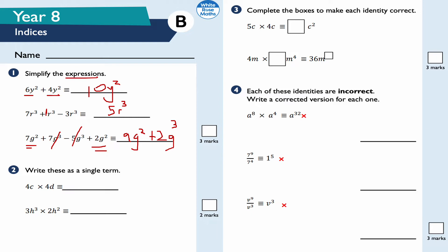Question number two: write these as a single term. 4c times 4d — 4 times 4 is 16, c times d is written as cd, so the answer is 16cd. Next: 3h cubed times 2h squared — 3 times 2 is 6. The laws of indices state that when multiplying with the same base, you add the powers, so h cubed times h squared is h to the power of 5. The answer is 6h to the power of 5.